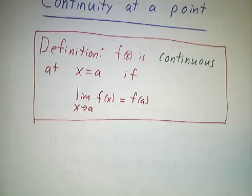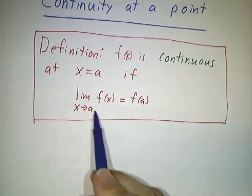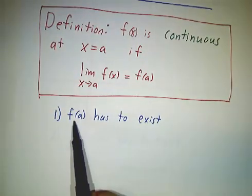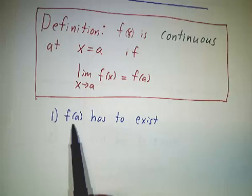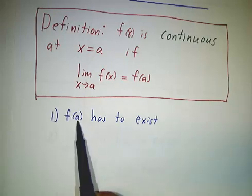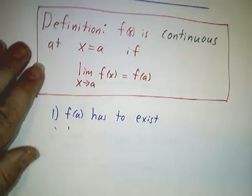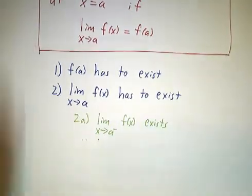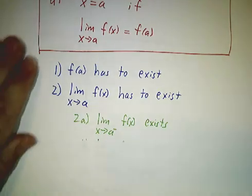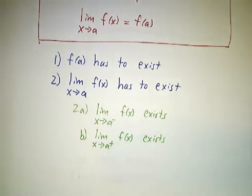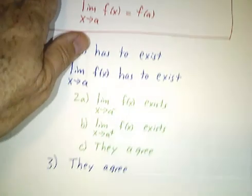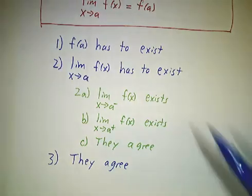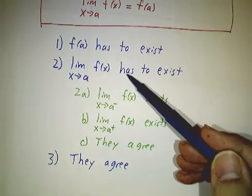Now, this actually has a few ingredients to it. For a function to be continuous, first of all, the value at that point has to exist. A has to be within the domain of f. The limit has to exist, and this in turn means that the limit from the left has to exist, the limit from the right has to exist, and the two sides have to agree. And finally, the value of the function and the limit have to agree.